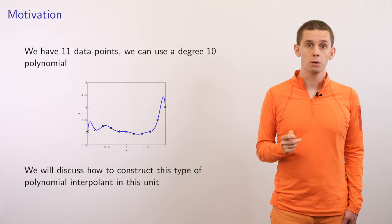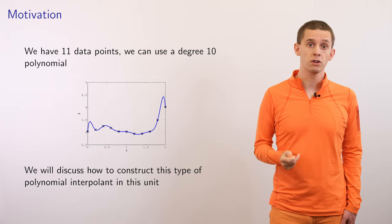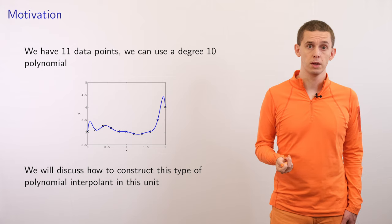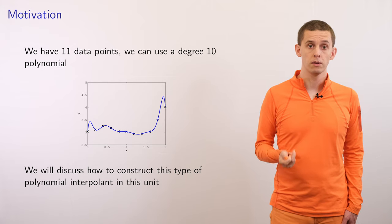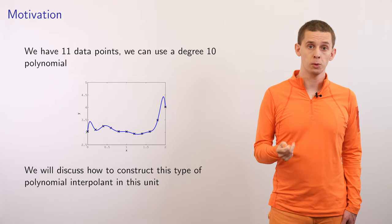One question we can ask ourselves is whether we can actually construct a smoother approximation to this data. Another approach here, given the 11 data points, is we can actually construct a unique degree 10 polynomial that passes through them. We'll look at the methods to do that later on in this unit. If we do that, we end up with the following function.